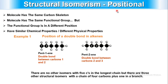The second type is position isomers. For example, pent-1-ene has 5 carbons with a double bond between carbon 1 and 2, while pent-2-ene has the double bond between carbon 2 and 3. They have the same functional group but the point of attachment is different — this is called position isomerism. There are no other isomers with a 5-carbon chain, but there are 3 other structural isomers with a 4-carbon chain plus one branch.